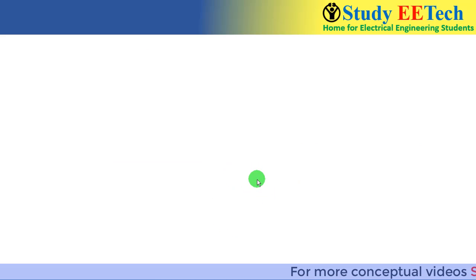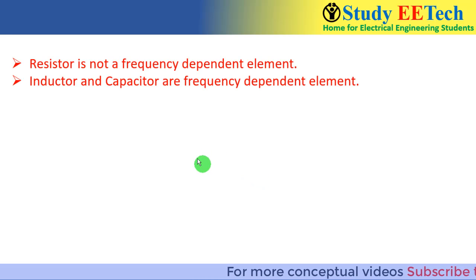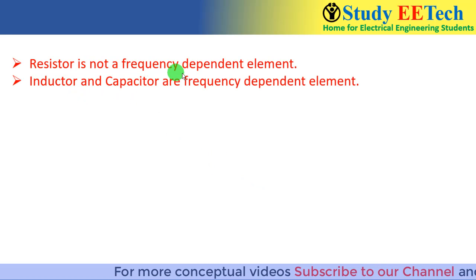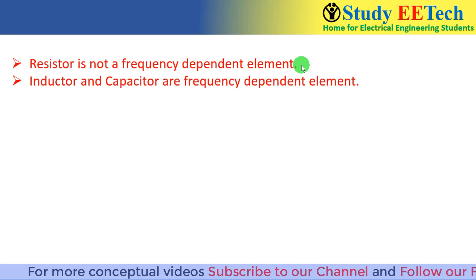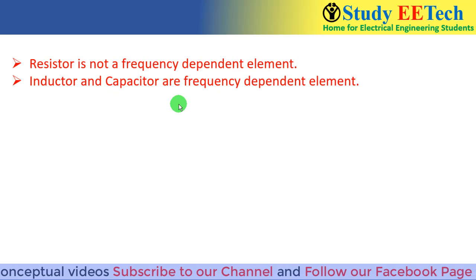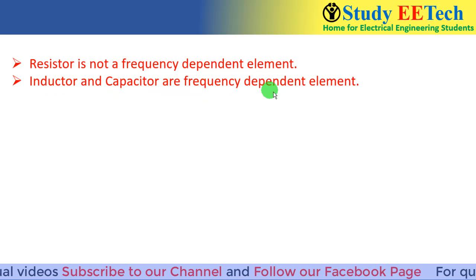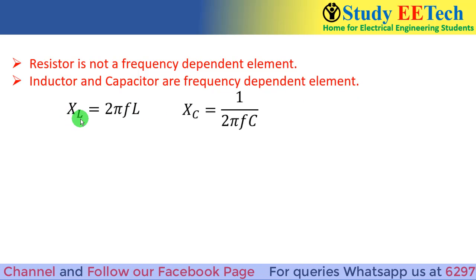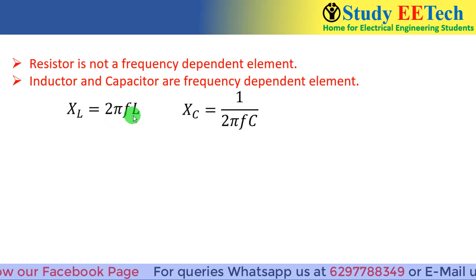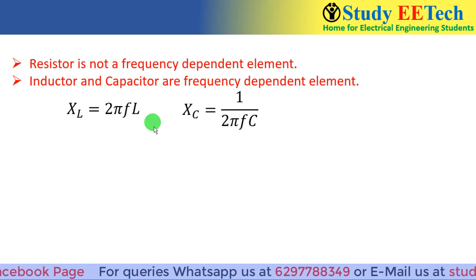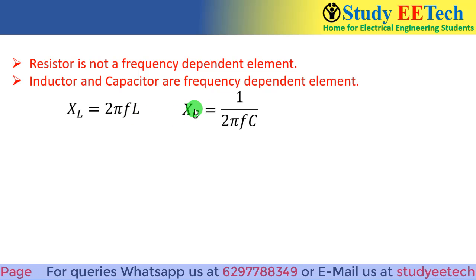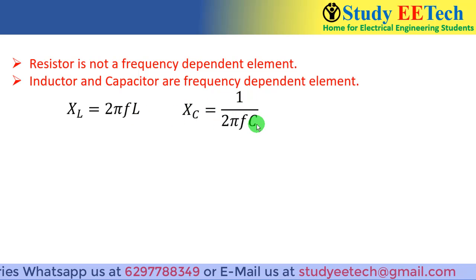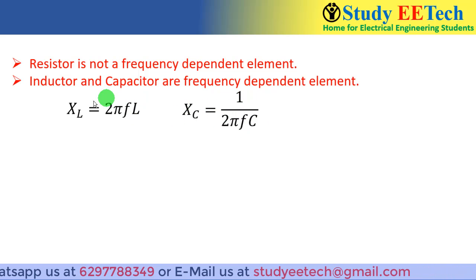The resistor is not a frequency-dependent element, but the inductor and capacitor are frequency-dependent elements, because the inductive reactance XL = 2πfL and the capacitive reactance XC = 1/(2πfC).